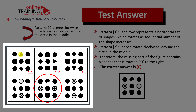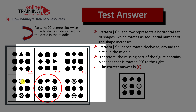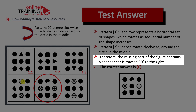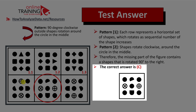Let's follow the triangle. In the first shape, the triangle points to the top. In the next shape, the triangle rotates 90 degrees clockwise and points to the right. In the following shape, the triangle rotates another 90 degrees and points to the bottom. A very similar pattern exists in the bottom row. Therefore, the missing part of the figure contains shapes that rotate 90 degrees to the right. The correct answer is choice C.